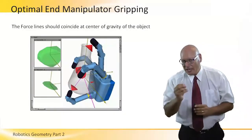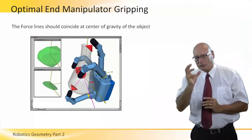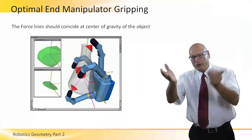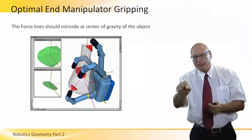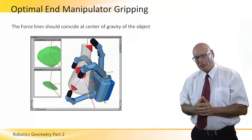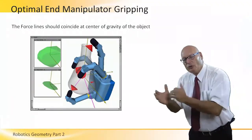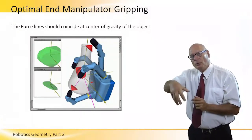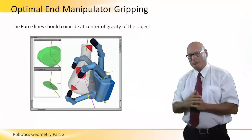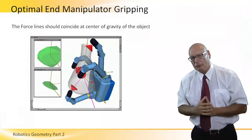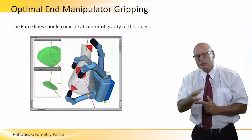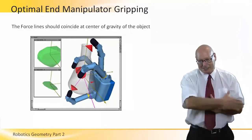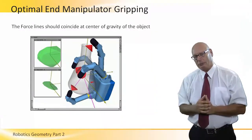It is extremely important to hold a subject where the force lines point to the center of gravity. If we do not do that, we might get into a situation where the object moves when the robot moves — something we do not want. We do not want the object to change its position as the robot itself moves.